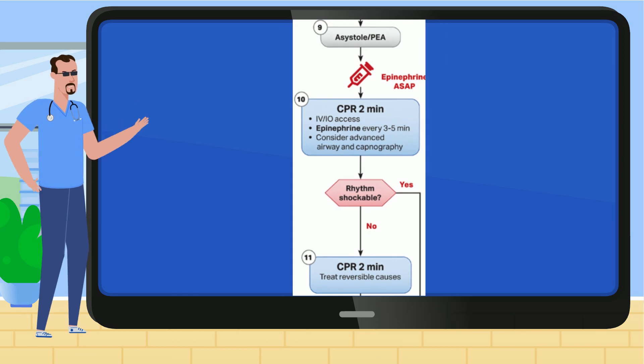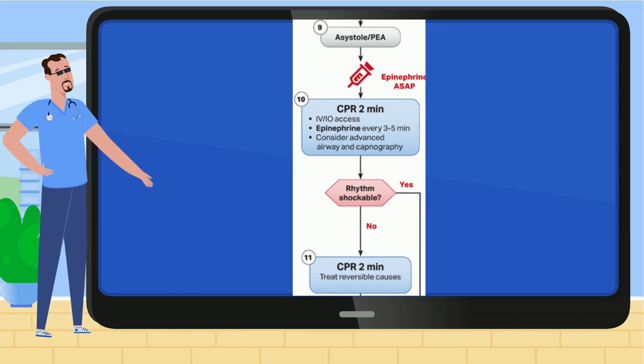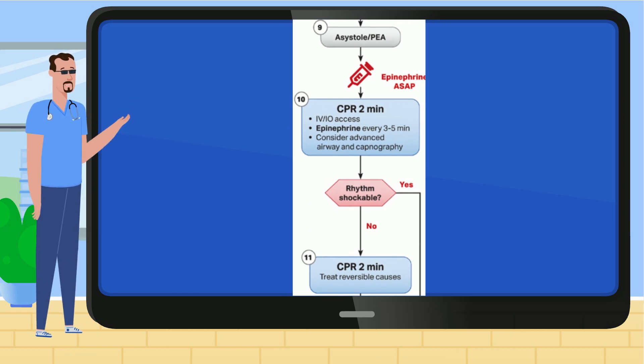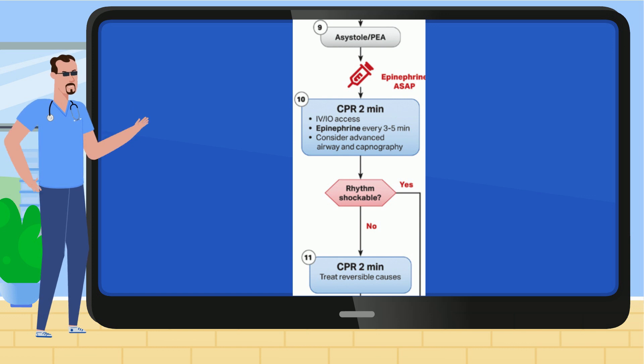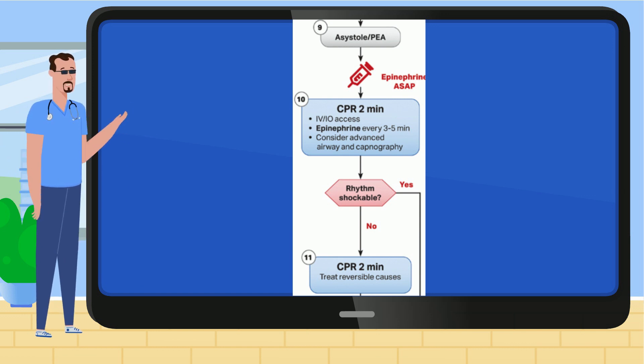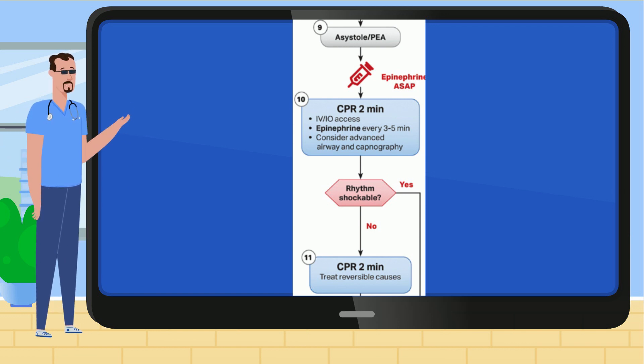Their compressions are in two-minute cycles along with epinephrine to be given every three to five minutes. As long as you're not in a shockable rhythm, you continue cycles of chest compressions and epinephrine with assisted ventilation.